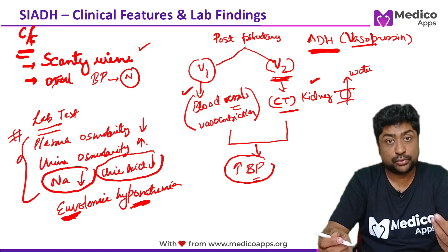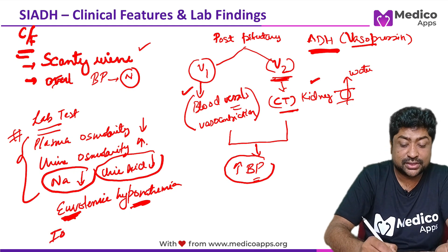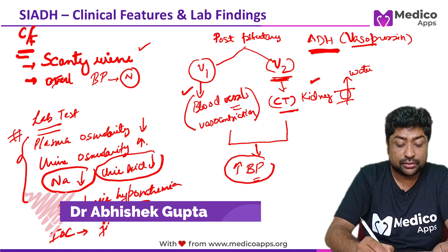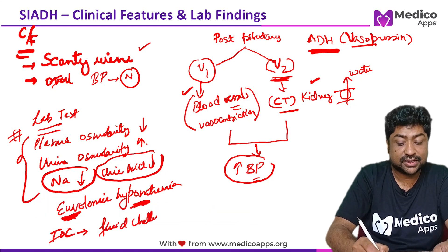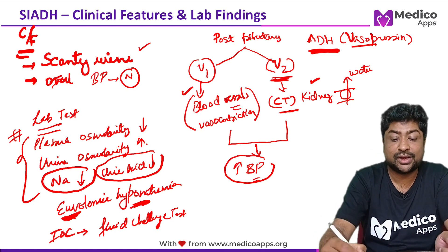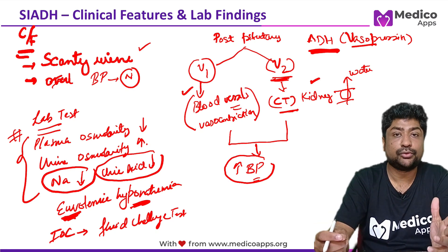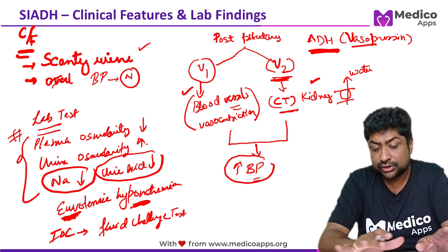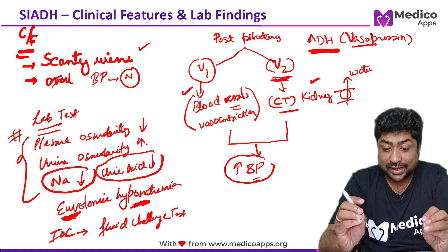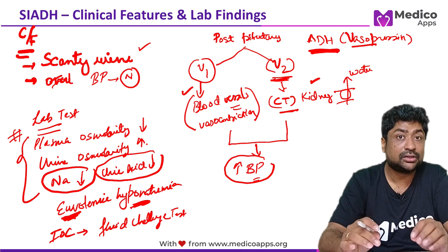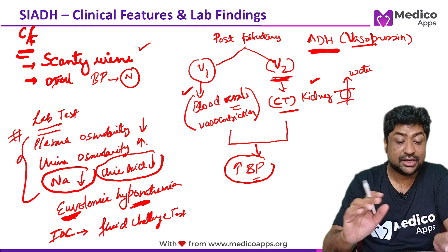What is the investigation of choice in SIADH? Interestingly, it is the fluid challenge test. No matter how much fluid we give, because of the elevated ADH, there will be scanty urine output. That is the investigation of choice. This covers the pathogenesis, clinical features, and lab findings of SIADH.